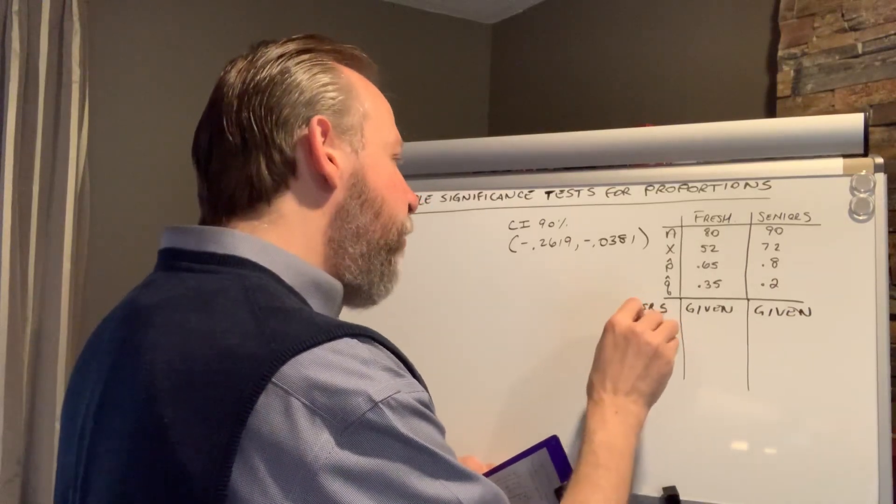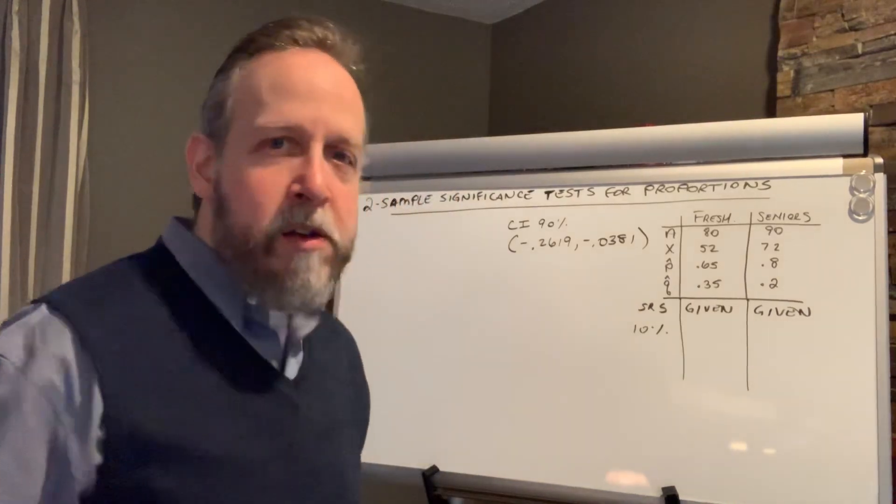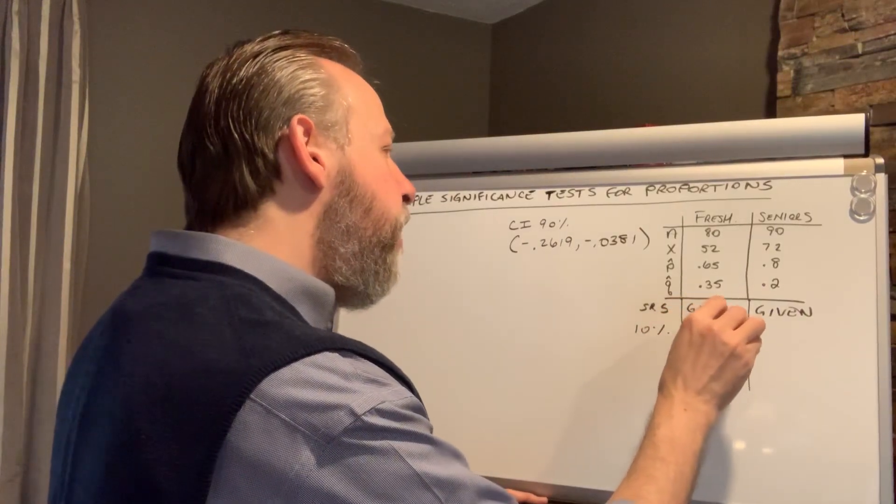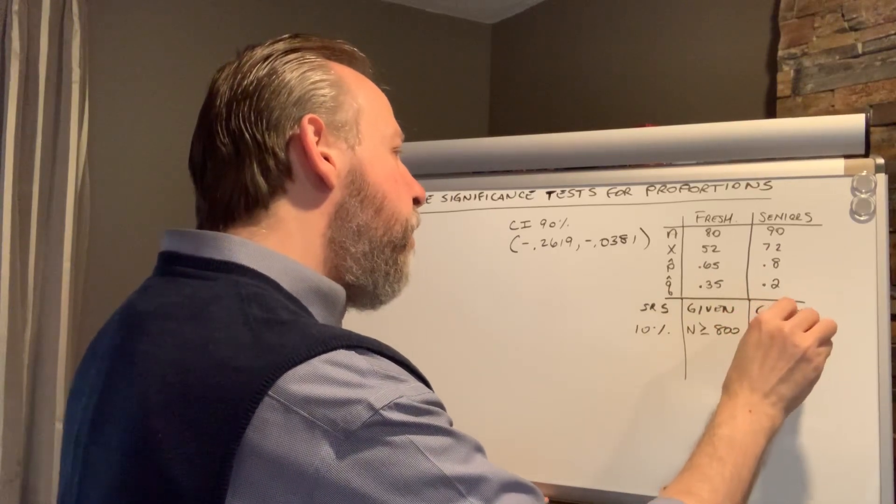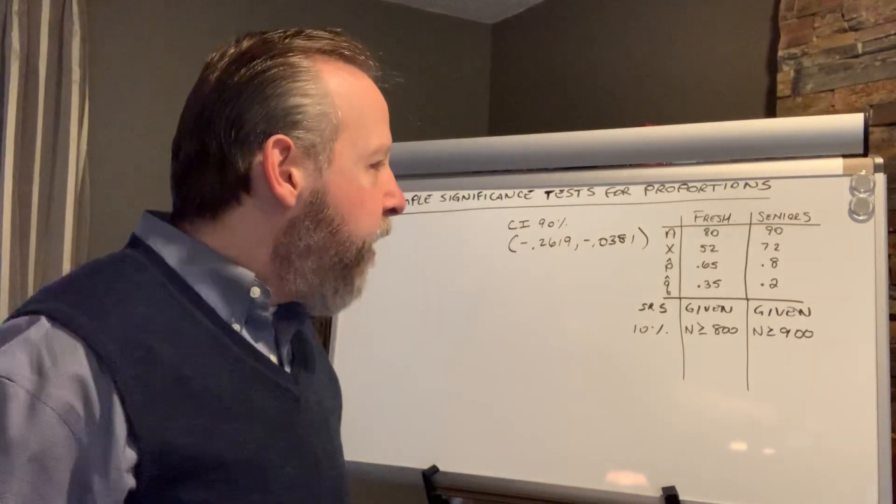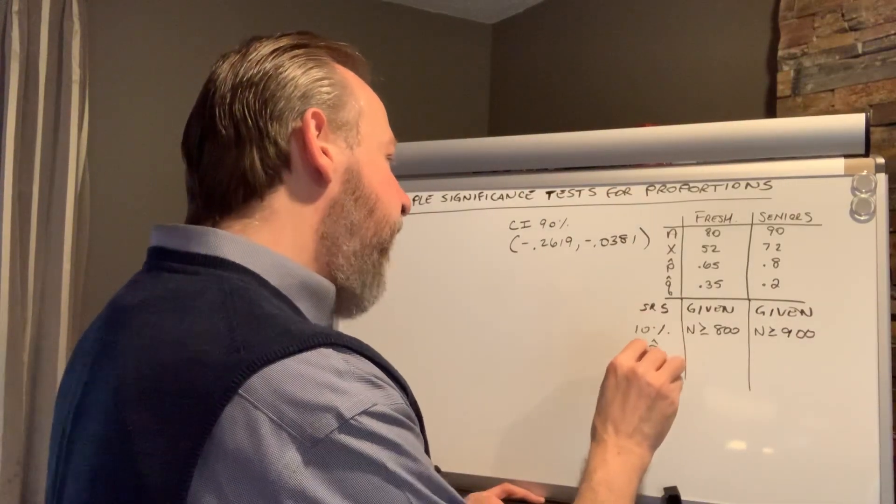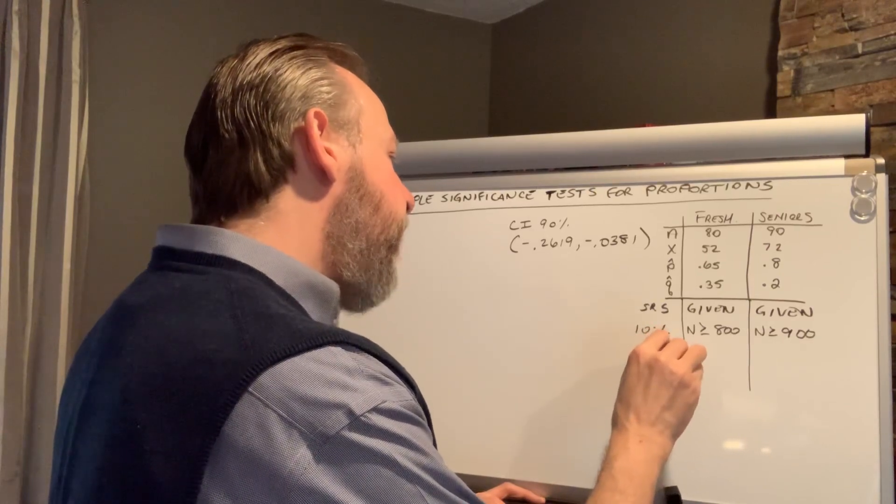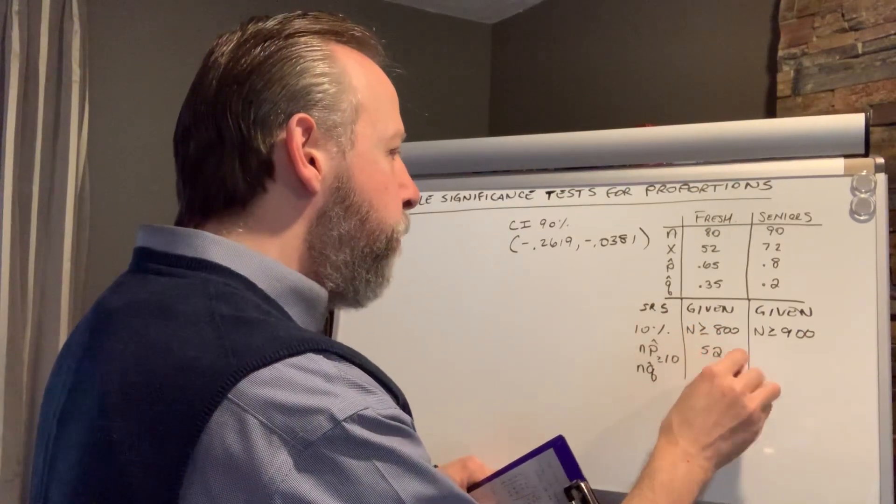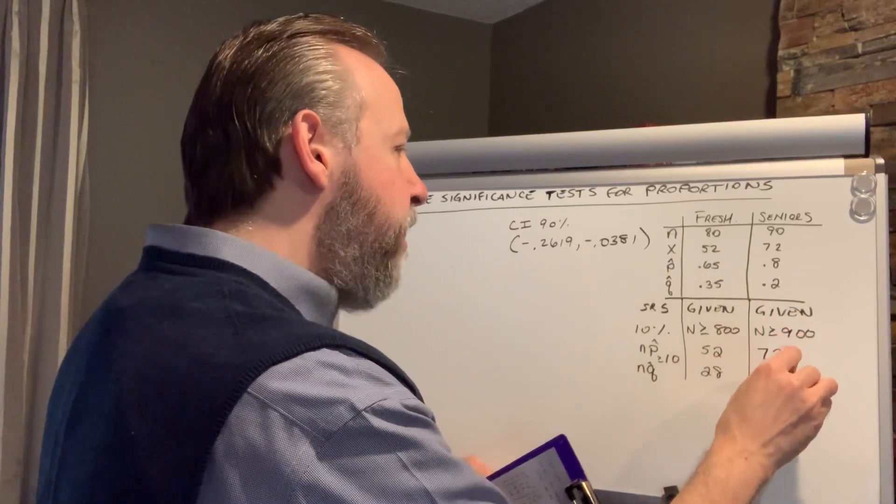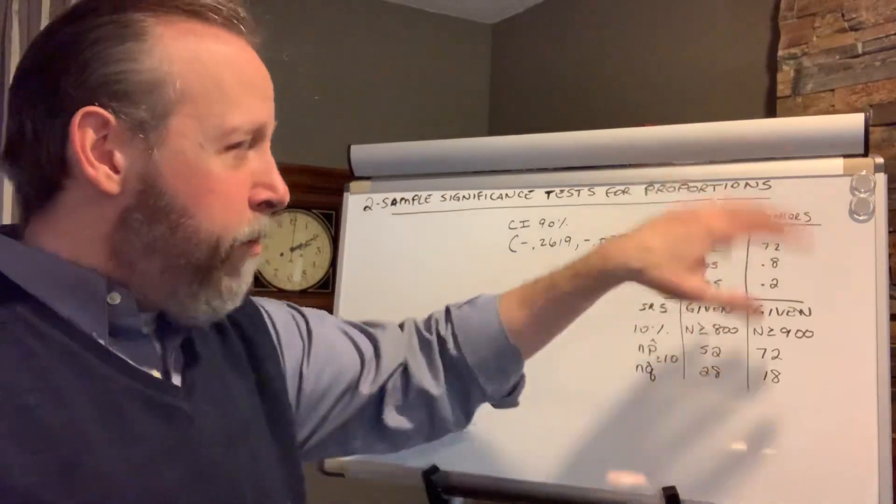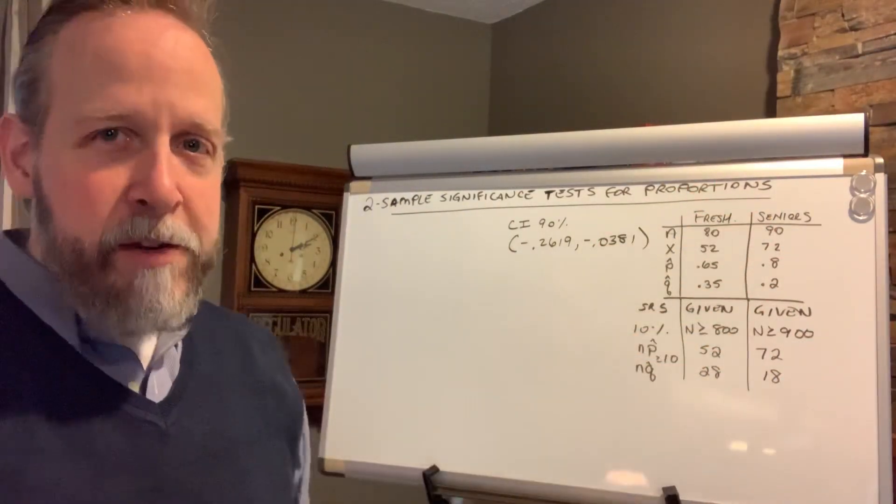We also talked about the 10 percent rule. We said that so long as the population of freshmen was at least 800 and the population of seniors was at least 900, that condition would have been verified and we again feel that that's true. And then we had the condition for n p-hat and n q-hat being at least 10. We can see that the freshmen had 52 yeses and that meant 28 no's, and the seniors had 72 yeses which meant 18 no's. You see how we have a nicely organized list of conditions now. So I've got all of my summary data and I've got all of my conditions verified. We're good.